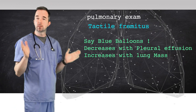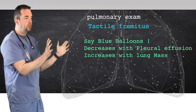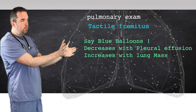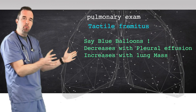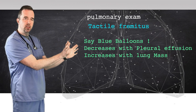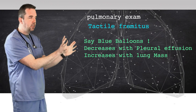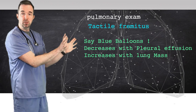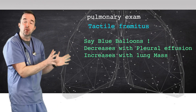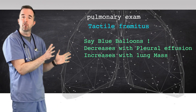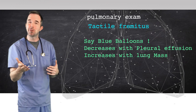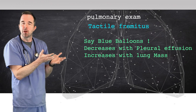I may do something like tactile fremitus. That's where I'll take my hands, put them on both sides of the patient's chest, and ask them to say something like 'blue balloons' — a nice deep guttural sound. As they say that, I feel with my fingertips to see if the vibration, the tactile stimulation, is the same on both sides or different. Patients that have pleural effusions will have decreases in tactile fremitus at the space of the effusion, whereas patients that have a mass or pneumonia will have an increase in tactile fremitus.